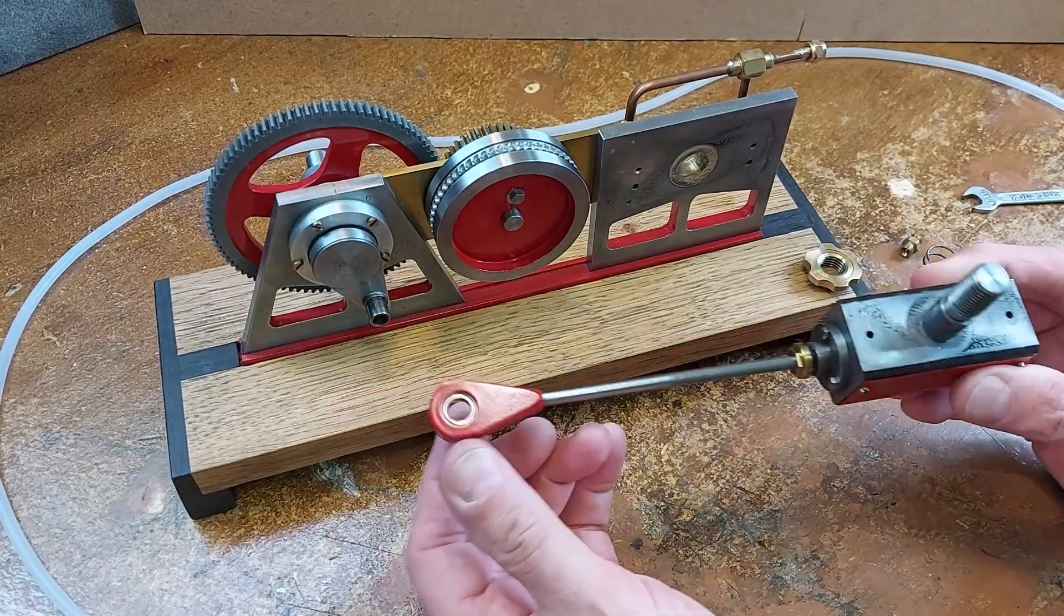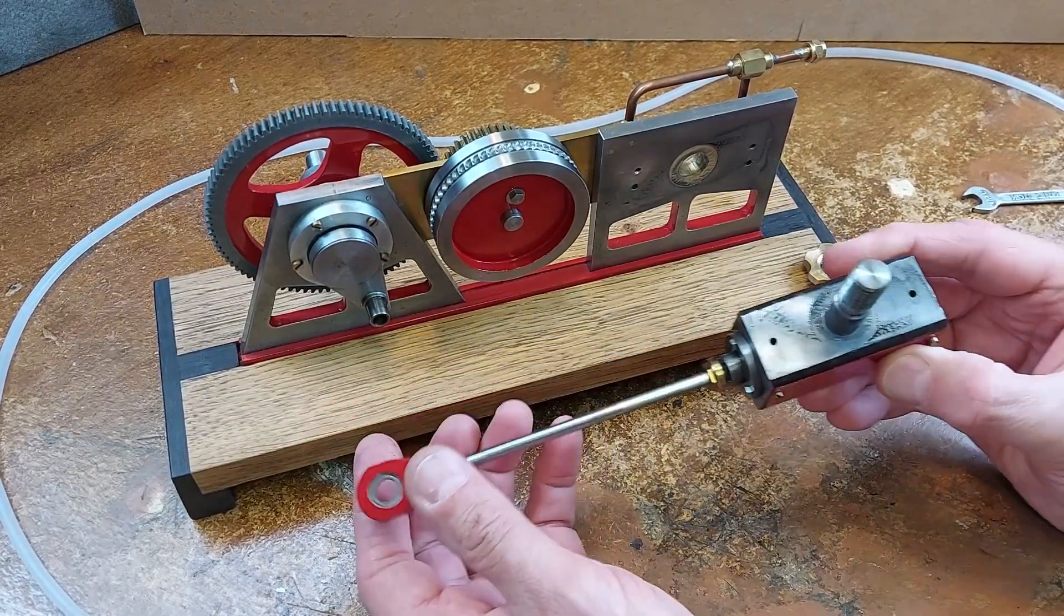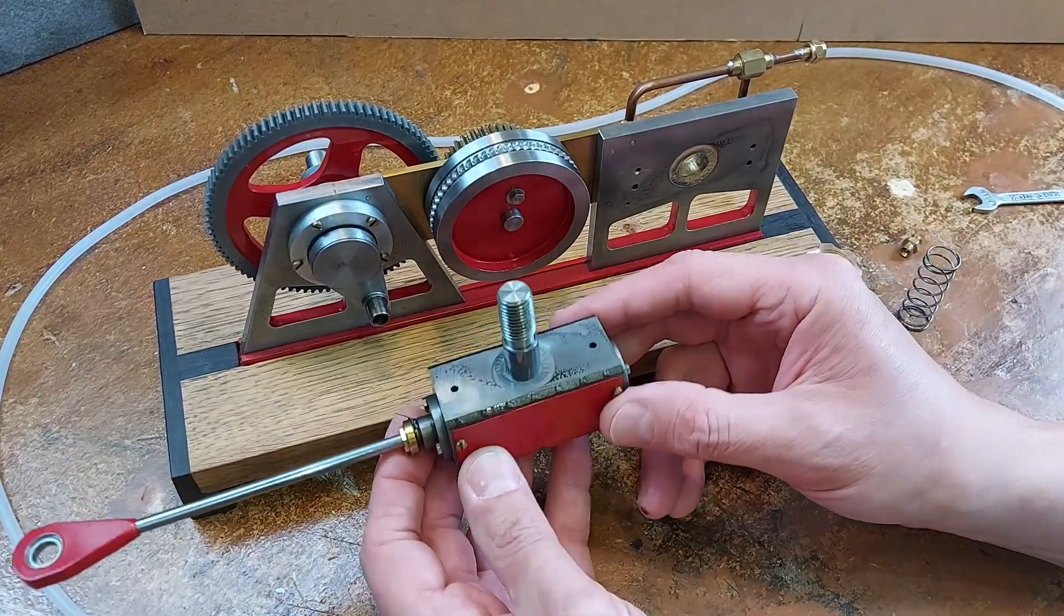And now you can see the con rod. Here's the big end of that con rod. And here you can see the cylinder.